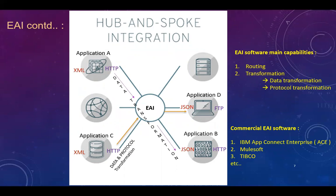In the EAI world, when using hub and spoke integration, there are some important capabilities that the EAI software provides — and those are key for communication between applications. One is routing. When application A wants to communicate with application B, it has to go via the EAI software — the hub sitting in the middle. The hub's duty is to take care of routing: it must ensure that the message coming from one application rightly reaches the target application.